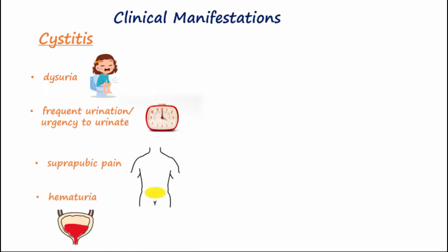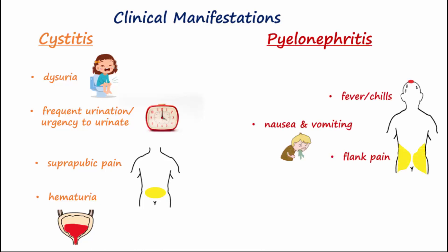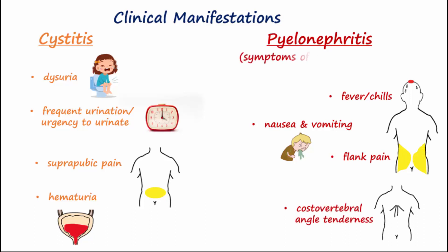Common symptoms with pyelonephritis include fever, chills, nausea, vomiting, flank pain, and costovertebral angle tenderness. With pyelonephritis, symptoms of cystitis are often but not universally present.